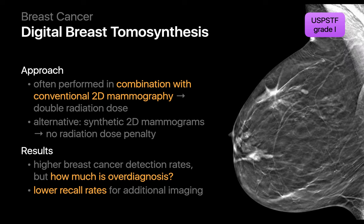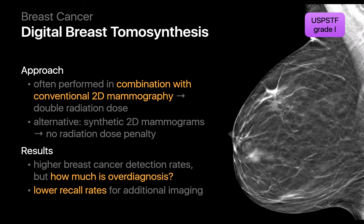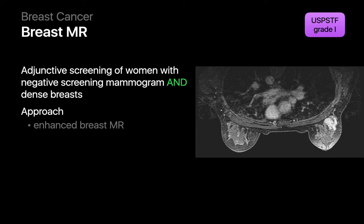Therefore, the USPSTF currently believes that there is insufficient evidence to ascertain the balance of benefits versus harms associated with the use of digital breast tomosynthesis for breast cancer screening and has currently assigned it an I grade. Although limited data suggests that adjunctive breast cancer screening with ultrasound can detect additional breast cancers in women who have dense breasts, most positive ultrasound breast screening tests are false positives and therefore adjunctive breast cancer screening with ultrasound is currently assigned an I grade by the USPSTF. Limited data also suggests that adjunctive breast cancer screening with MRI can also detect additional breast cancers in women who have dense breasts. However, like with breast ultrasound, a large number of positive MRI screening test results are false positives and therefore adjunctive breast cancer screening with MRI is also currently assigned an I grade by the USPSTF.